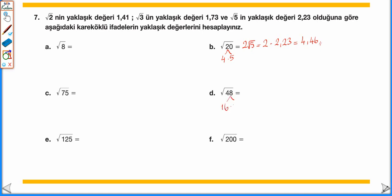√48 = 4√3 olduğundan, 4 × 1,73 = 6,92'ye eşittir. √200 = 10√2 olduğundan, √2'nin yerine 1,41 yazılır: 10 × 1,41 = 14,10 olarak bulunur.